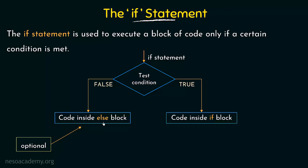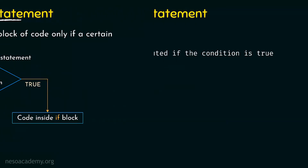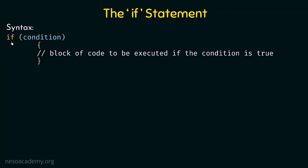Let's see the syntax of how to write the if and else statements. We write 'if' and within parentheses we write the condition to check. If the condition is true, then within curly braces we write the block of code that will be executed. The control comes to the if statement, checks the condition, and if it is true, whatever is written inside the block will be executed.